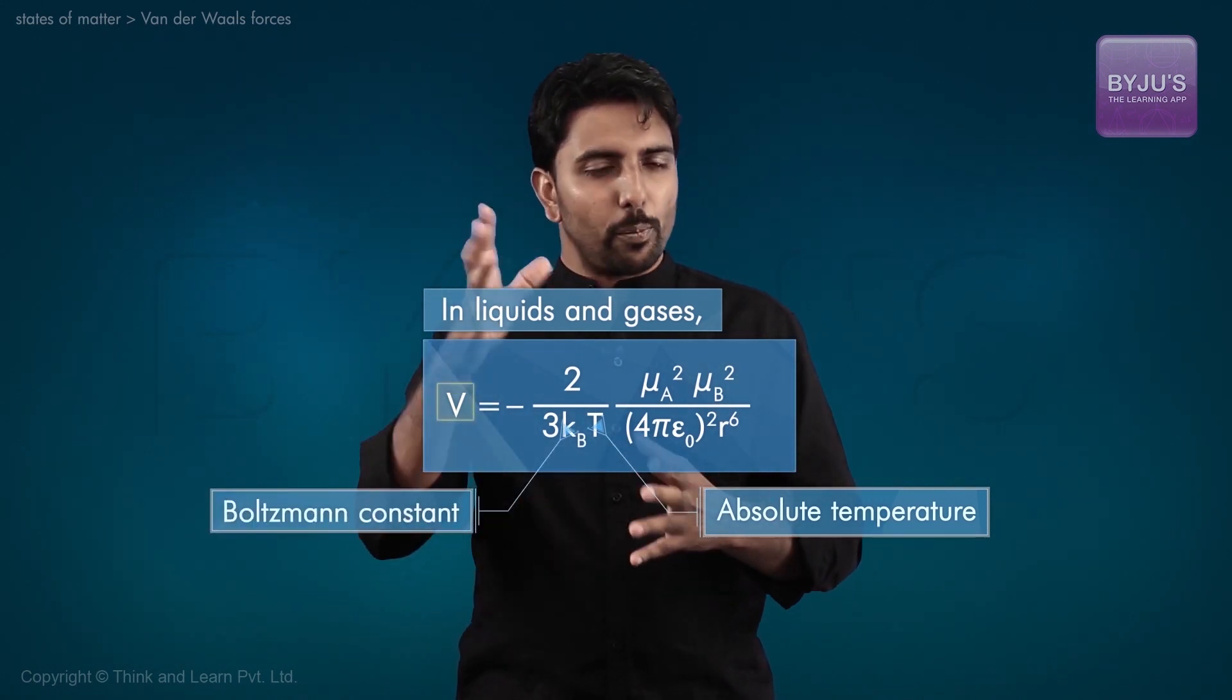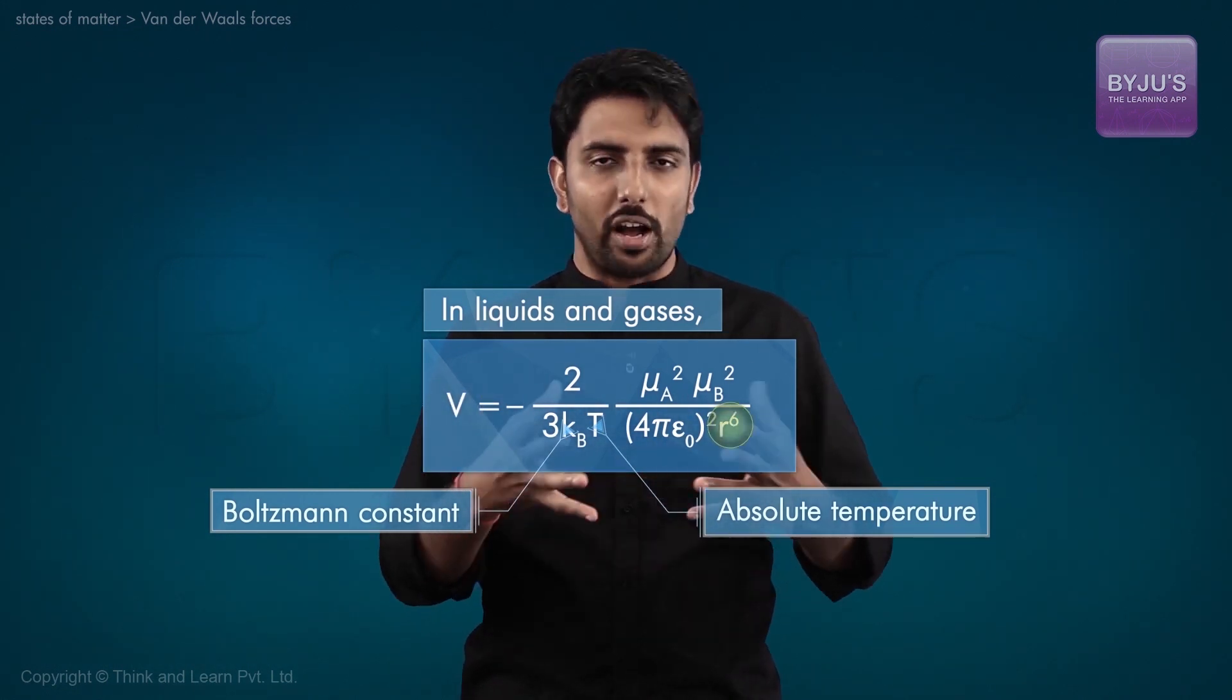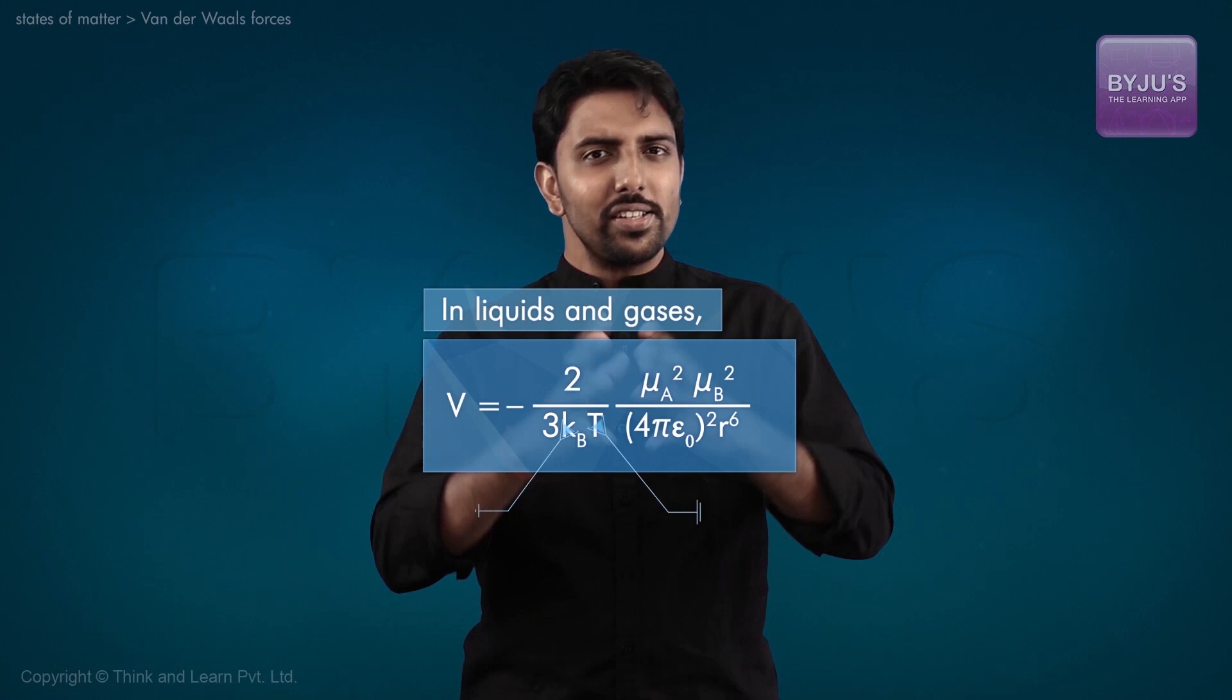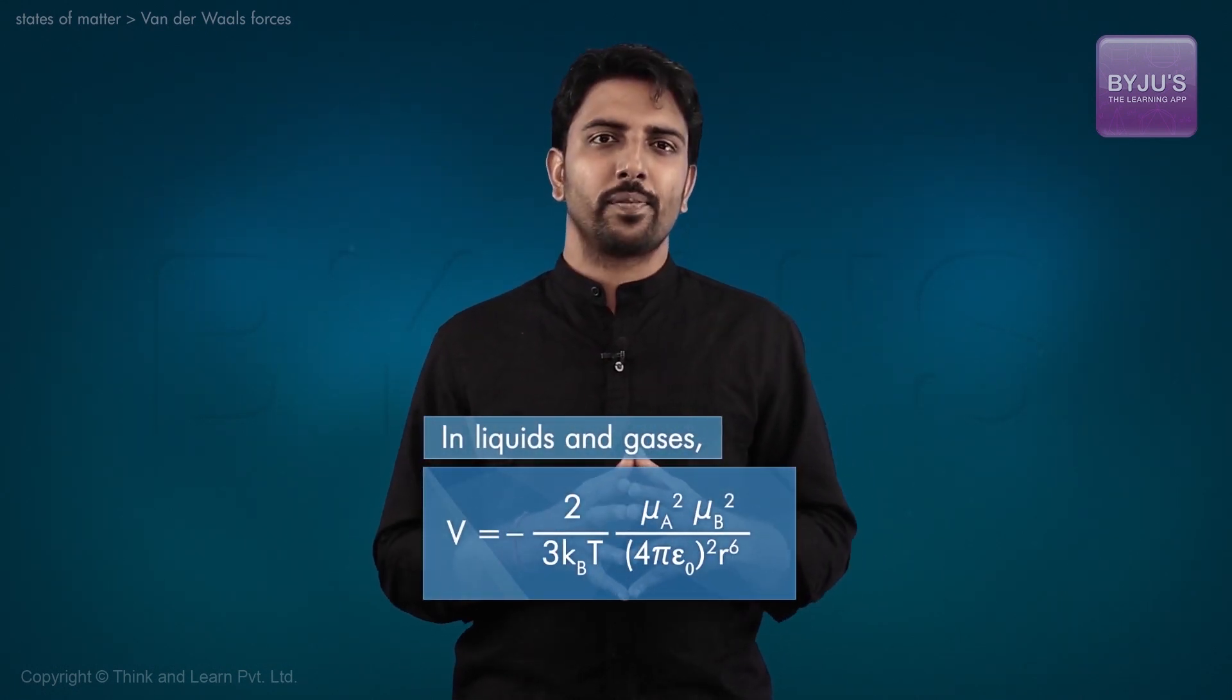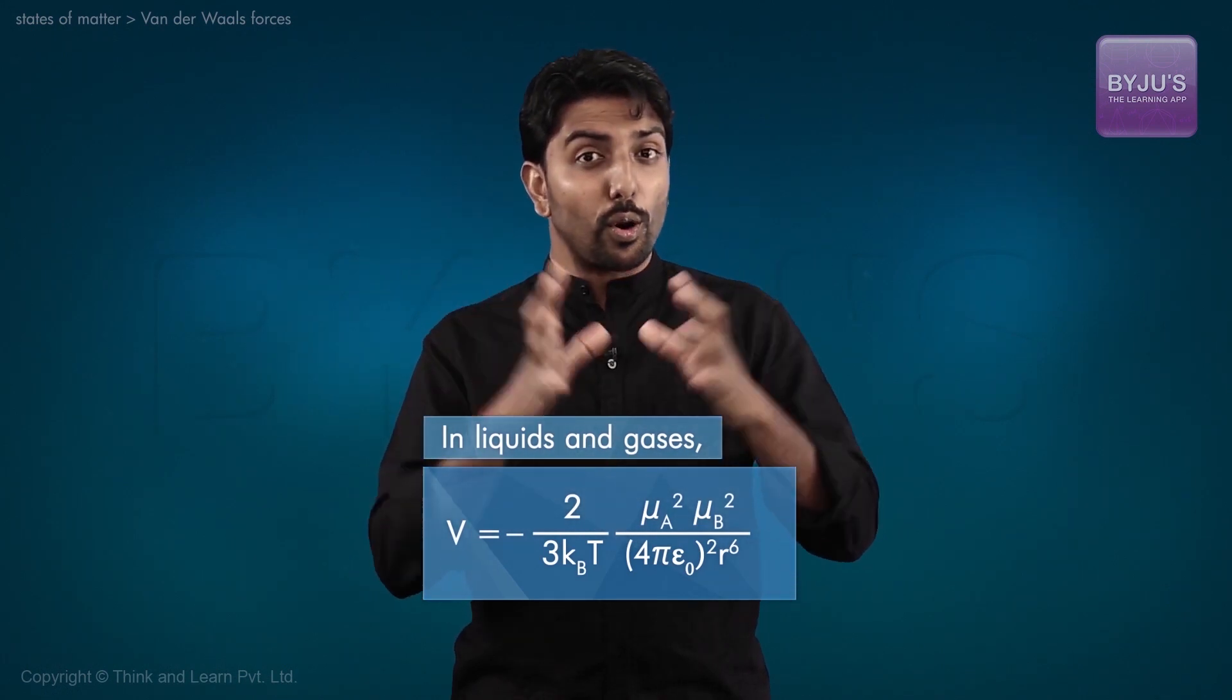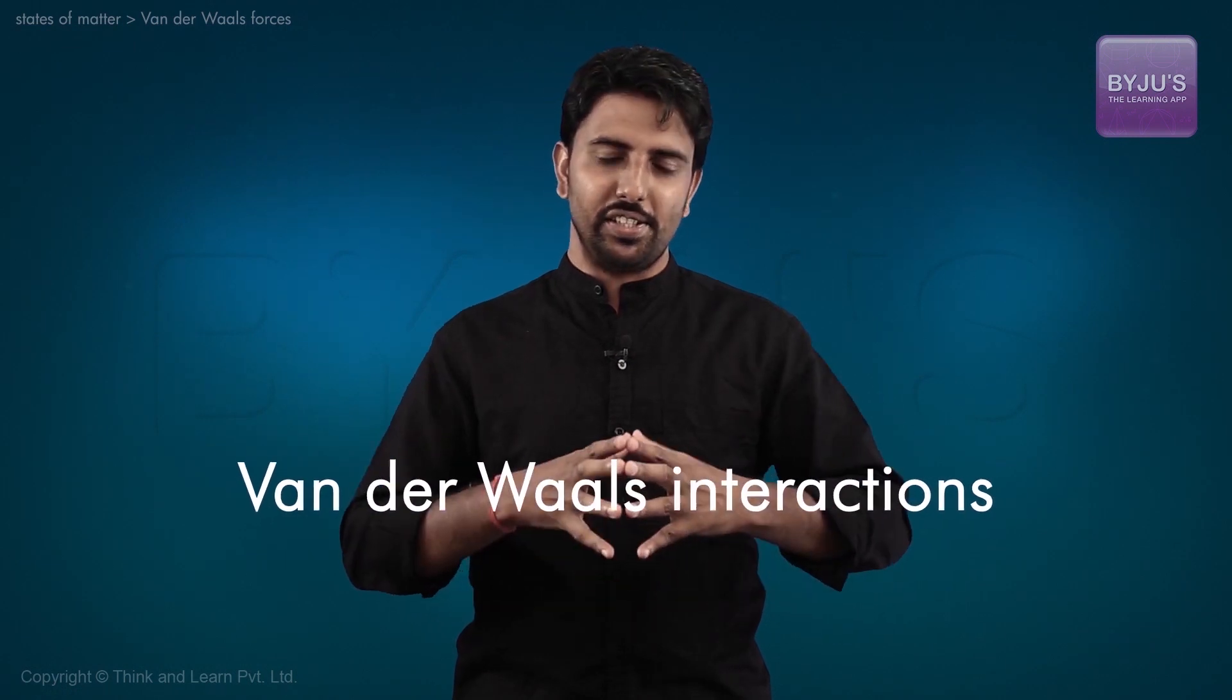We see that the potential energy V is inversely proportional to the sixth power of r. So, the energy of the interaction falls off rapidly with increasing distance. Attractive interactions that fall off as r to the negative 6 are collectively referred to as van der Waals interactions.